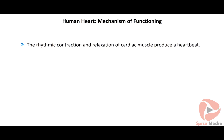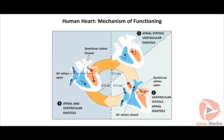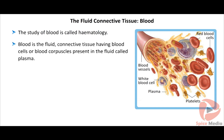The rhythmic contraction and relaxation of cardiac muscle produces a heartbeat. In a normal person, the heart beats 70 to 80 times per minute. The contraction phase of the heart is known as systole and the relaxation phase is known as diastole. Heart functioning includes three phases: auricular systole, in which both auricles contract and pump blood into the ventricles; ventricular systole, in which both ventricles contract and pump blood into the blood vessels; and ventricular diastole, in which both auricles and ventricles relax.